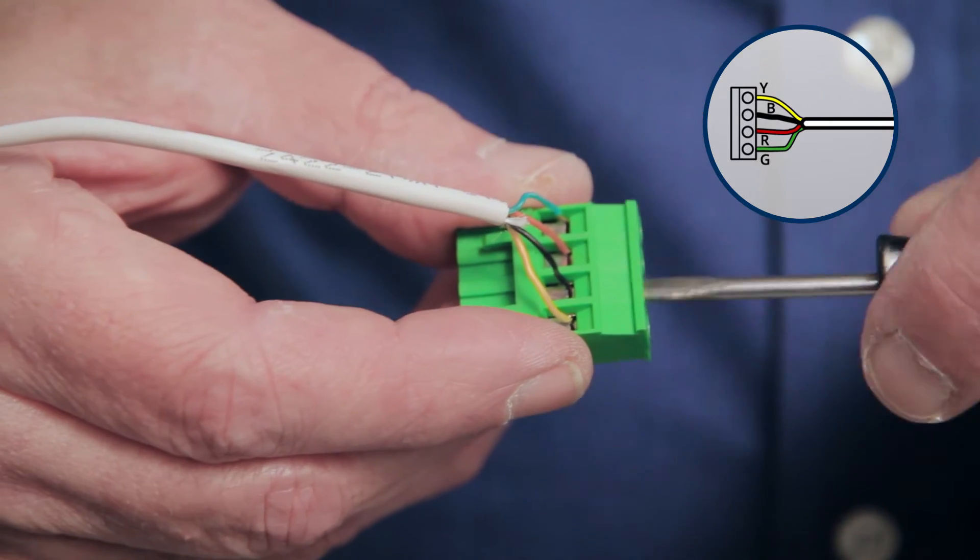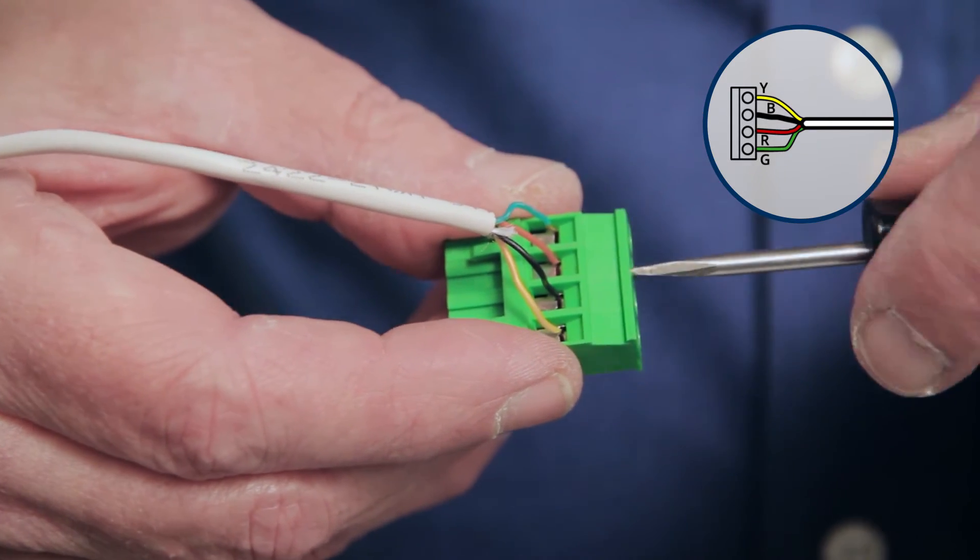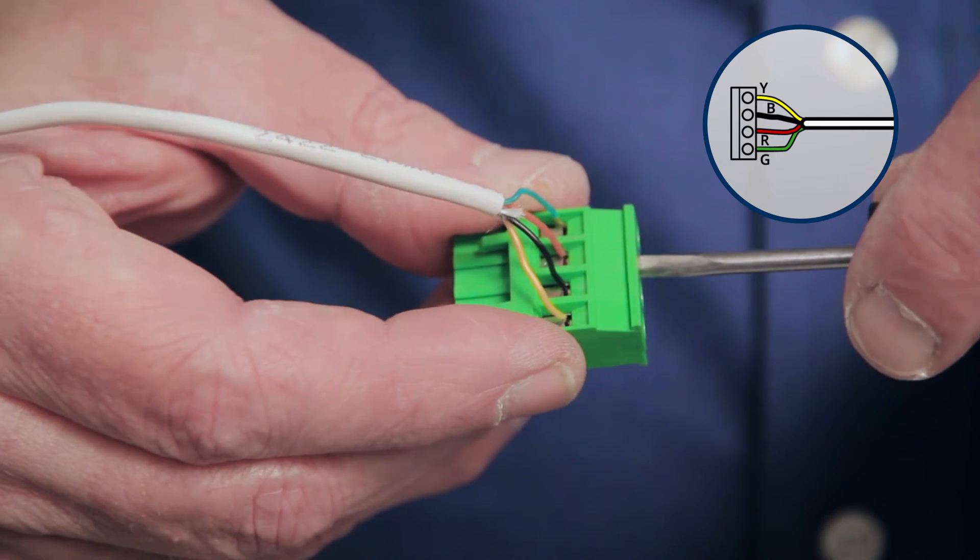Connect each wire to its corresponding terminal by referring to the sticker affixed on the unit. Yellow wire to Y, black wire to B, red wire to R, and green wire to G.